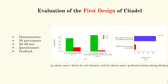To evaluate the first design of Citadel, we demonstrated our system to 39 participants through a 20 to 40 minute in-person session. They were then given a questionnaire to provide their feedback. We found their desire for two features: the blocking option and fine-tuning over automated identification of abusive emails.